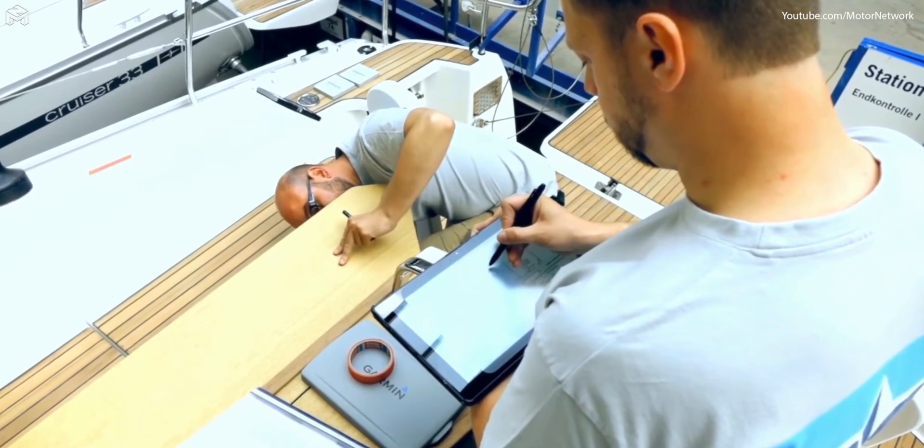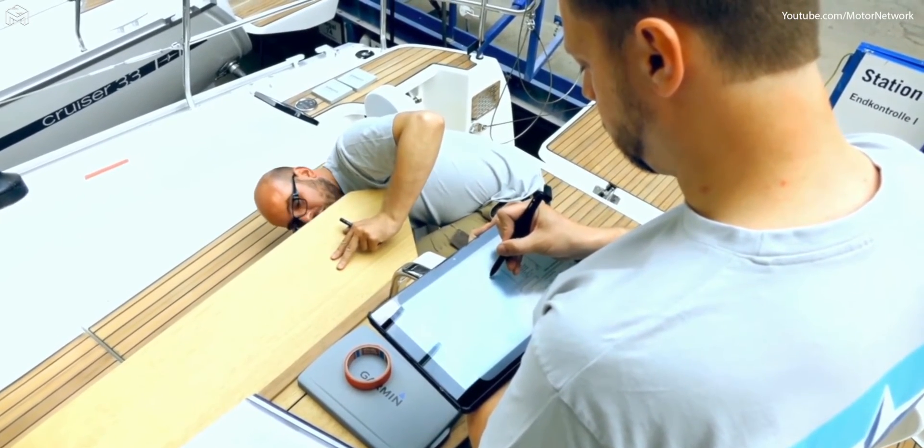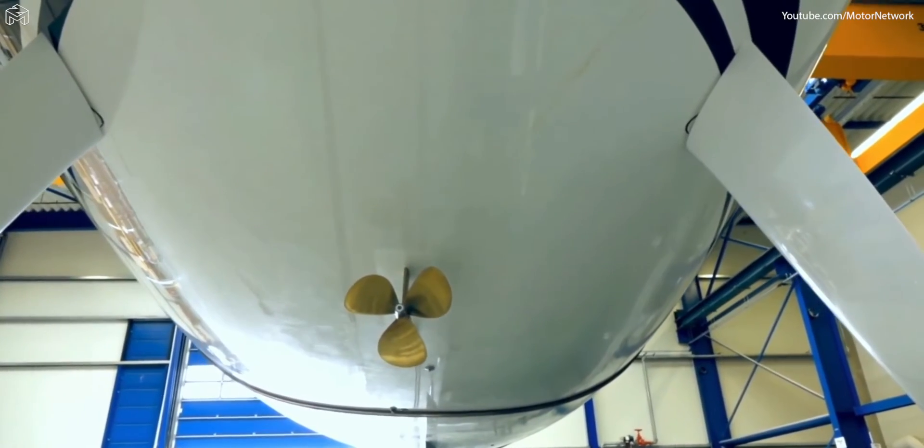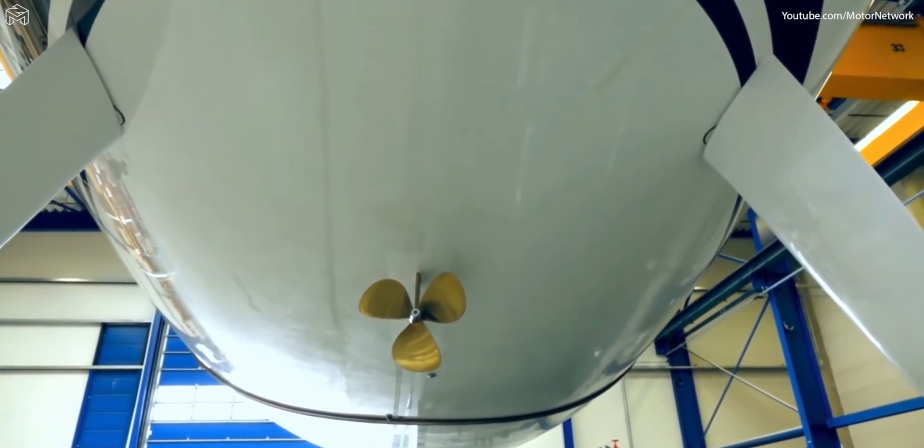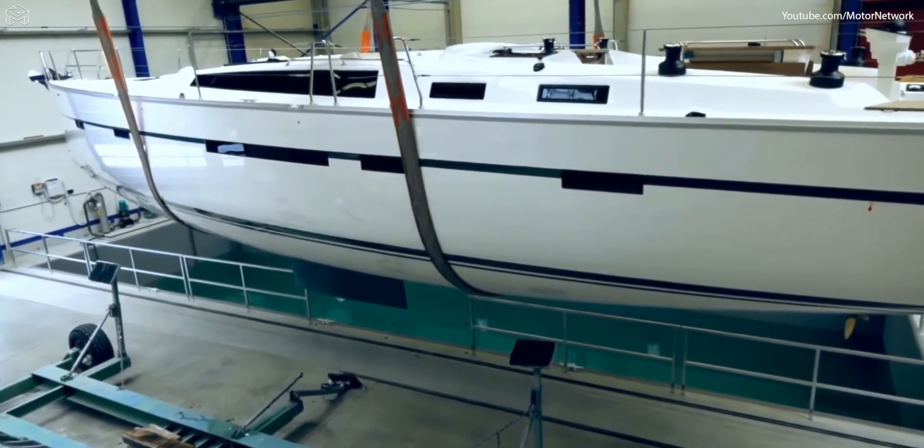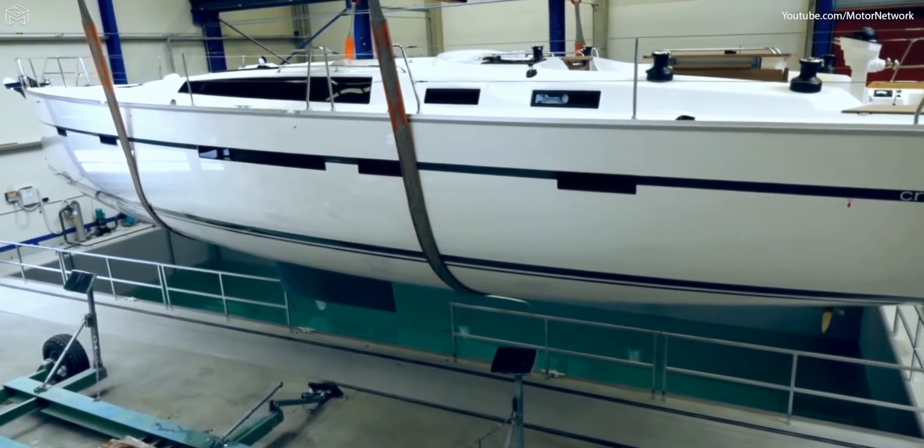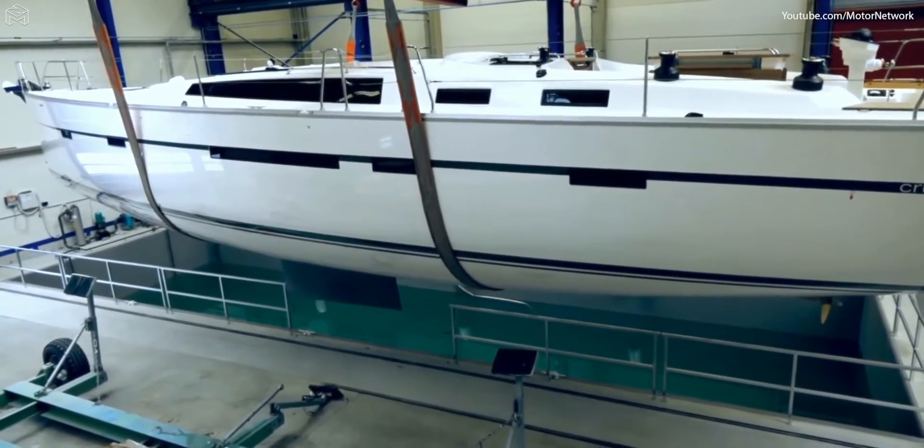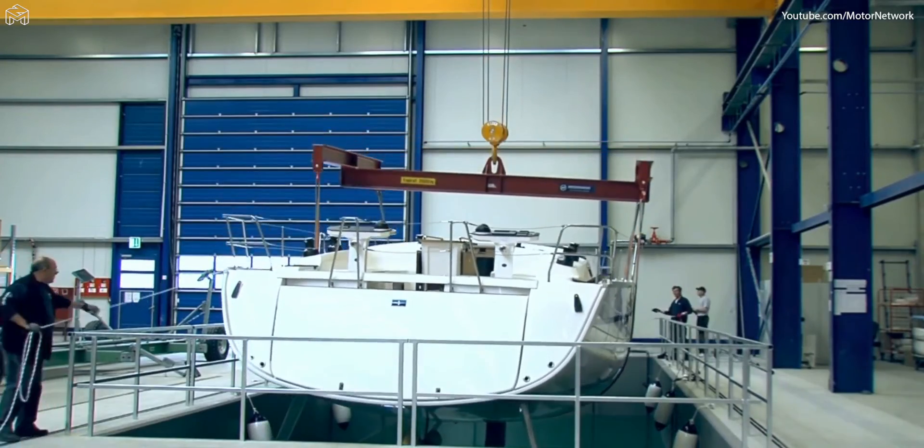Even the most minimal of flaws are noted and rectified. The first contact a Bavaria yacht has with water is in the yacht's testing pool. Even large yachts up to 56 feet and with a flotation depth of up to 4 meters can fit in the testing pool.